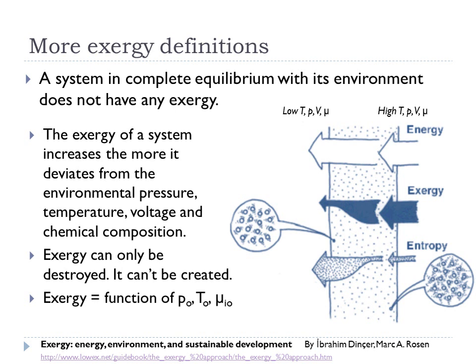The exergy of the system increases the more it deviates from the environmental pressure, temperature, voltage, and chemical composition. The exergy of the universe can only decrease — meaning exergy can only be destroyed, it cannot be created.